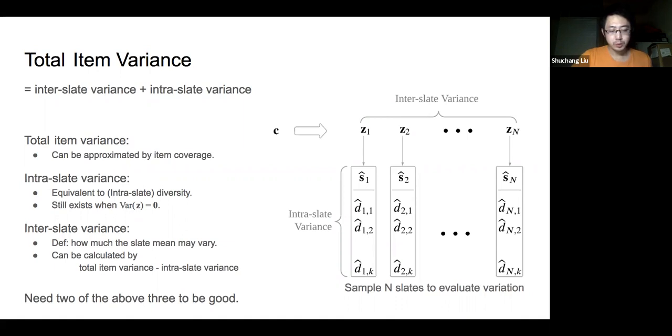In our experiment, we regard intra-list variance as identical to intra-slate diversity, and we regard item coverage as the approximation of total item variance.